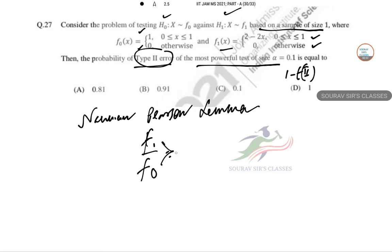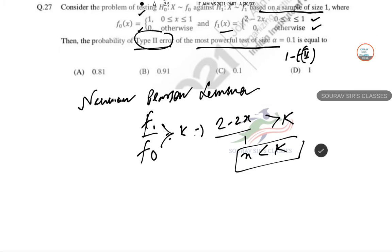This gives you x less than K. Now alpha equals probability of rejecting H0 given that H0 is true, that is the error. So probability of x less than K given F of 0.